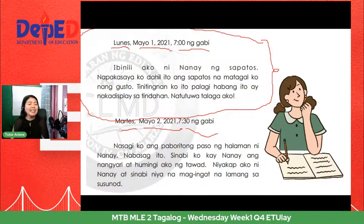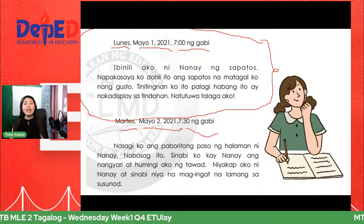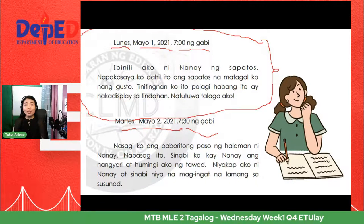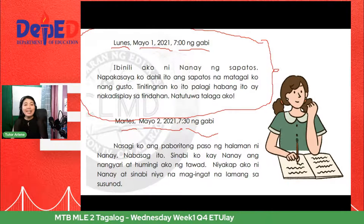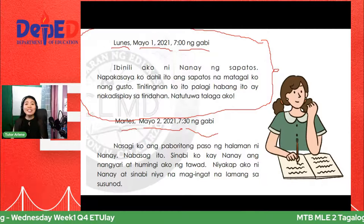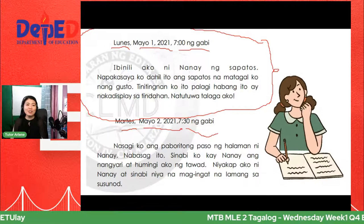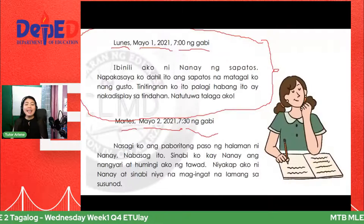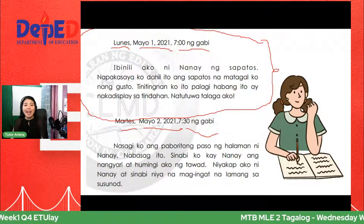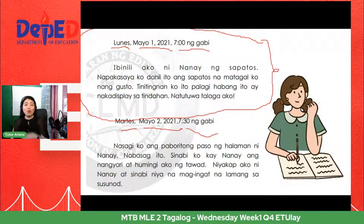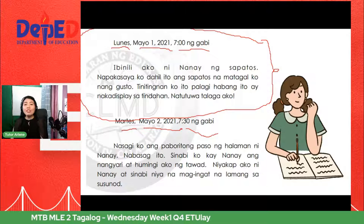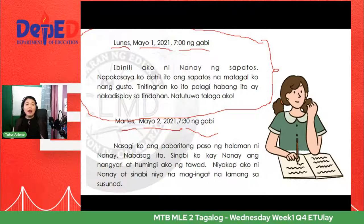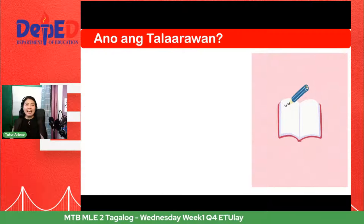Yan yung ikalawang nangyari sa araw ni Ana. Dito sa parteng ito, siya ay medyo malungkot — ngunit sumaya uli siya dahil hindi naman naggalit ang kanyang nanay, bagkos ay nag-alala pa ito at sinabi sa kanya na magingat na siya sa susunod. Anong nabasa mo sa talaarawan ni Ana? Ikinuwento niya kung ano yung mga nangyari sa kanyang araw o sa kanyang buhay. Anong napansin mo sa pagsulat niya sa talaarawan?